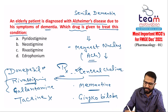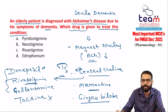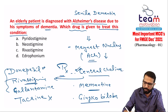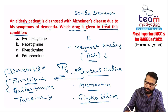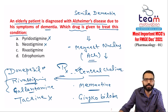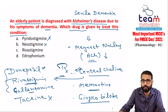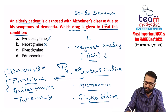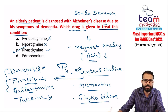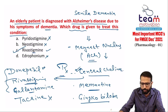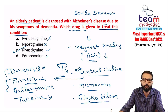Rivastigmine transdermal patches are available — very effective with longer action. Tacrine is not used nowadays due to hepatotoxicity. Pyridostigmine and neostigmine do not reach the brain because they are water-soluble quaternary compounds. Edrophonium is also shorter-acting and does not reach the brain. Only donepezil, rivastigmine, and galantamine are effective for Alzheimer's.